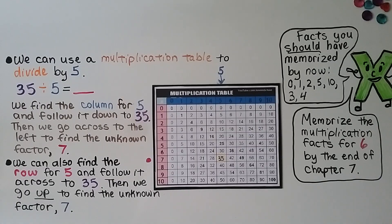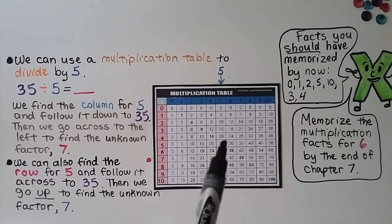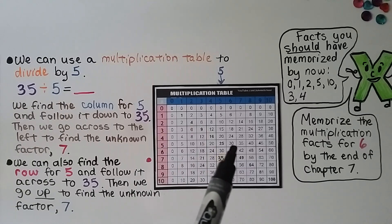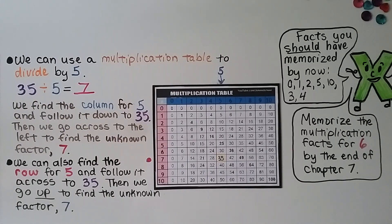We can use a multiplication table to divide by 5. For 35 divided by 5: find the column for 5 and follow it down until we see 35, then go across to the left to find the unknown factor — it's a 7. We could also find the row for 5 and follow it across to 35, then go up to see that it's a 7. So 35 divided by 5 is equal to 7. You can find blank and completed multiplication tables on the Joanne School Facebook page.